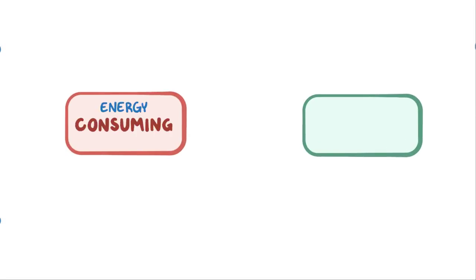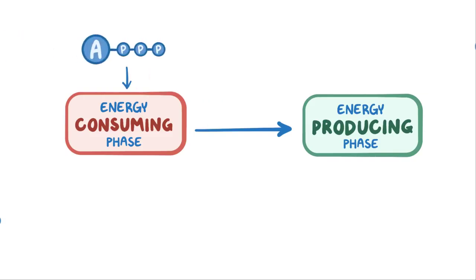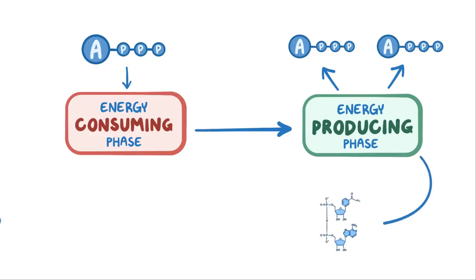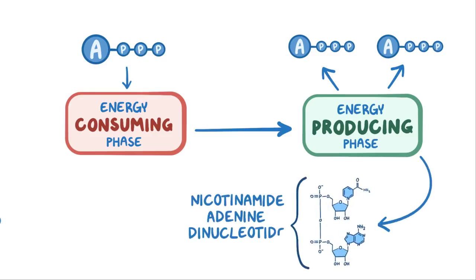Glycolysis can be divided into two phases, an energy-consuming phase and an energy-producing phase. It's like a business investment, the cell needs to spend some energy before it can start making energy. And like any good investment, the cell gets more energy back than it puts in. The energy-consuming phase requires ATP, and the energy-producing phase generates ATP, as well as other molecules like reduced nicotinamide adenine dinucleotide, or NADH, which can be used to make ATP. We can keep track of all of this using an energy counter.